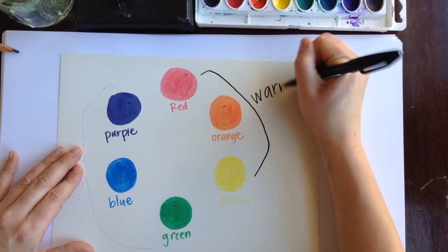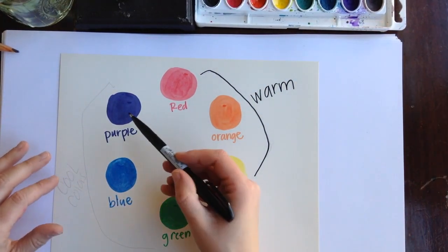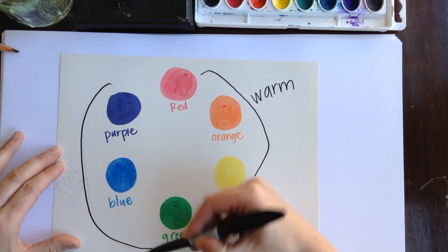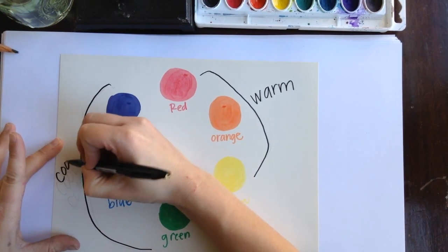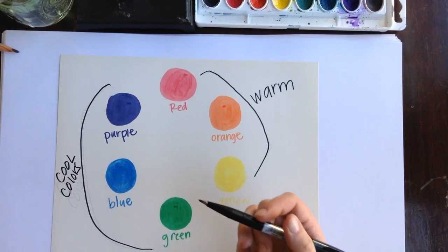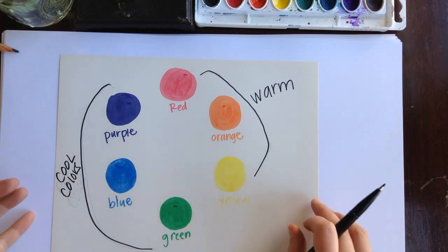Think fire, lava, things that are hot, warm colors. Purple, blue, and green are typically our cool colors. So water, ice, other things like that would be considered your cool colors.